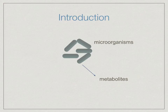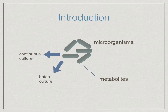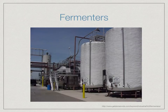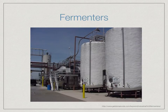Microorganisms are used to produce metabolites industrially, so they're grown in vats or fermenters. They can either be grown in batch or continuous cultures, depending on the metabolites required. The main function of a fermenter is to provide a sterile, controlled environment for the growth of the microorganism or animal cell to obtain a desired product. The vessel should be capable of being operated aseptically for a number of days.